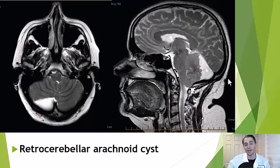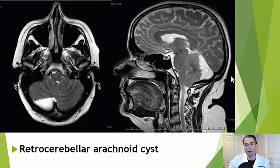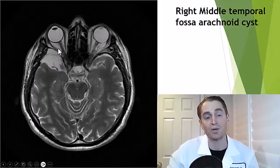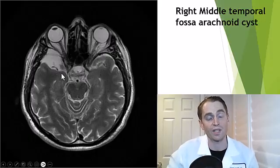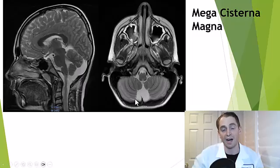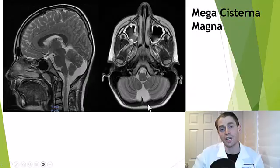On the right, you're looking at a sagittal image, and you can see the same arachnoid cyst posterior to the cerebellum. It's also common to see them in the middle temporal fossa. Here you can see a right middle temporal fossa arachnoid cyst behind the right eye, a very common location. Sometimes you get enlargement of the normal fluid-filled space behind the cerebellum, the cisterna magna, and when it's very enlarged, it's sometimes called a mega cisterna magna.